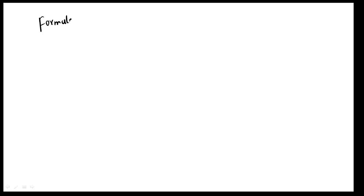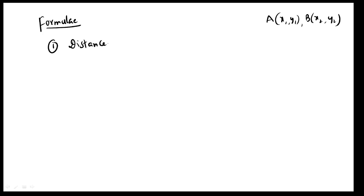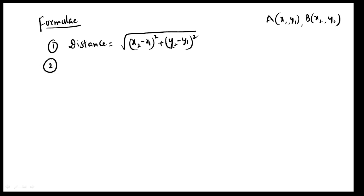This formula is the first formula. Two points: A at point x1, y1 and B at point x2, y2. The distance formula is: square root of (x2 minus x1) whole square plus (y2 minus y1) whole square. This is called the distance formula.